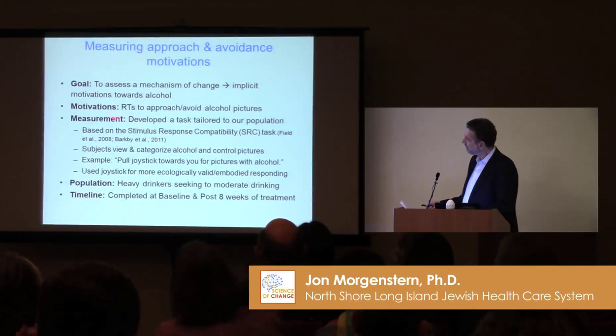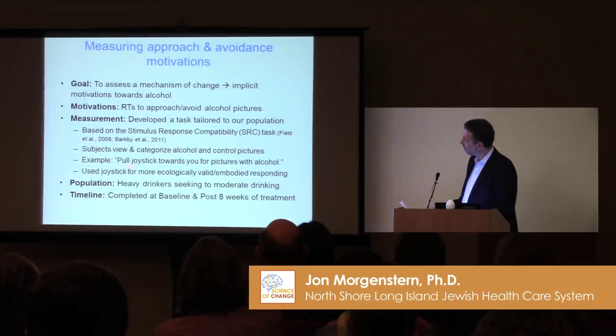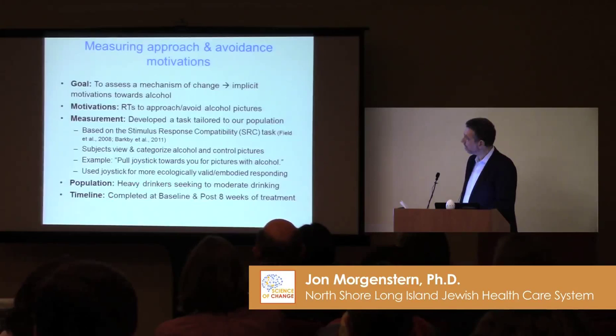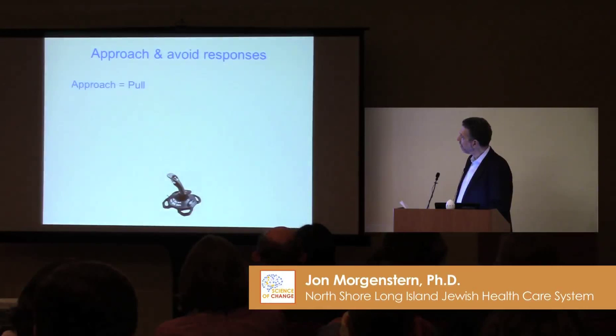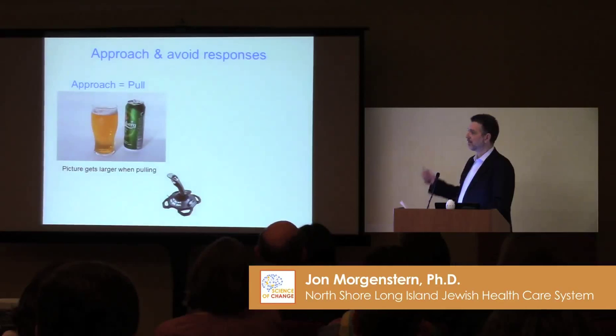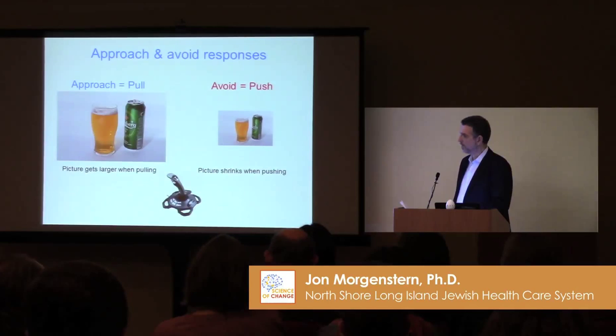What we did was look at reaction to alcohol approach and avoid pictures. Our measurement tried to adapt the stimulus compatibility response task to our population. The population used was heavy drinkers — problem drinkers in treatment seeking to moderate their drinking, with a baseline to eight-week timeframe. In the task, approach means you pull the joystick towards you and the alcohol picture gets bigger, which is ecologically valid. On the avoid condition, the alcohol stimulus goes away. Then we have a control stimulus and we figure out reaction times.